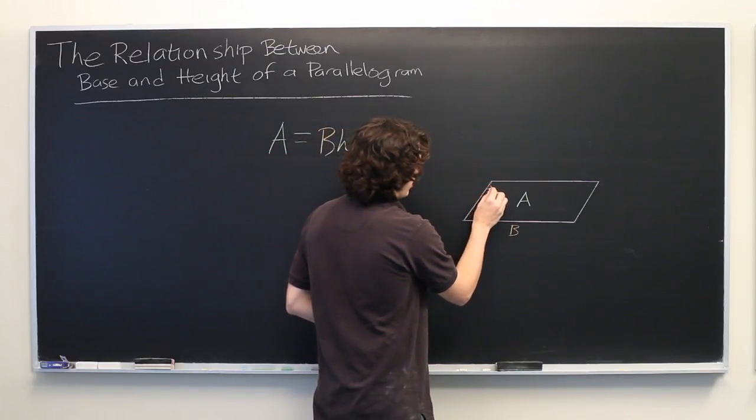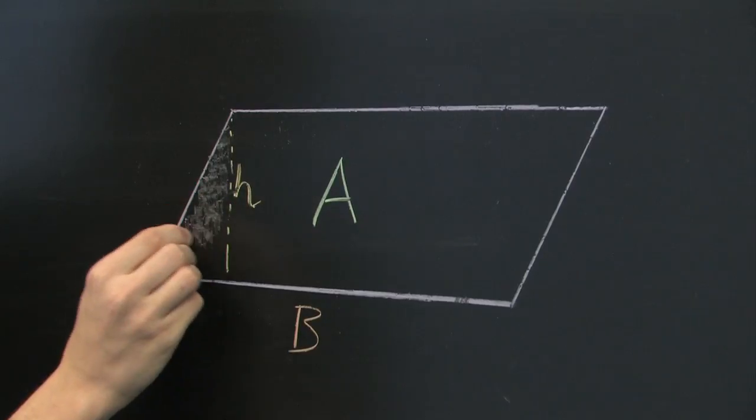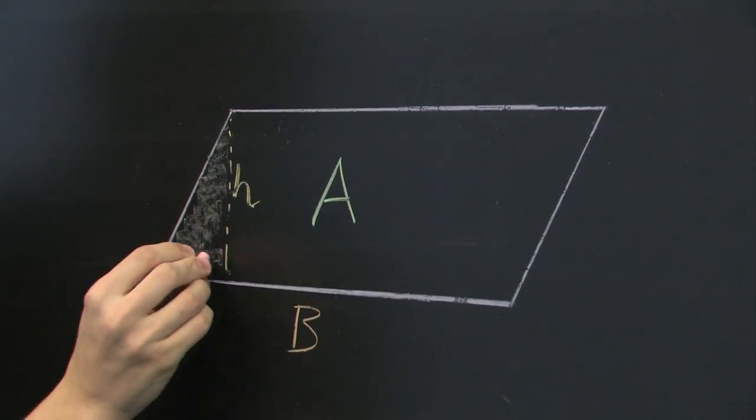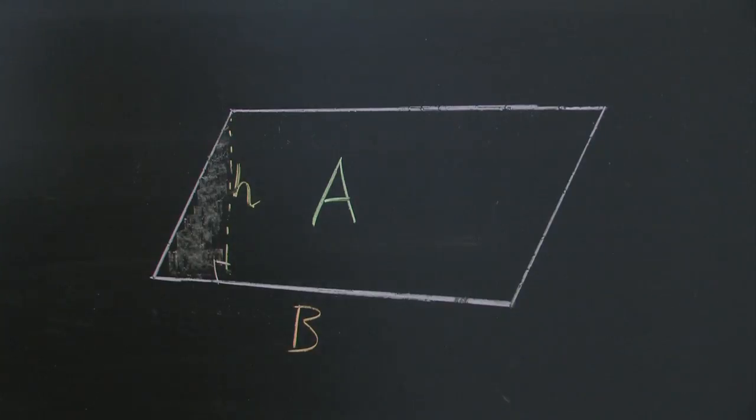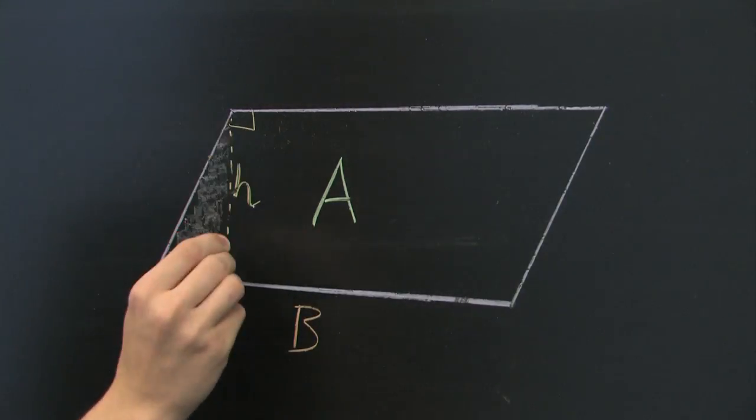Let's shade in the area to the left of this height. We see that we get a right triangle, which also implies that this is a right angle and this is a right angle.